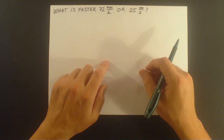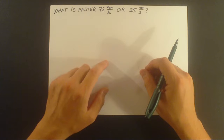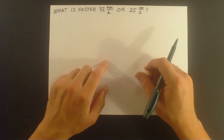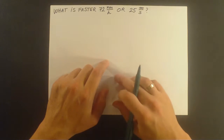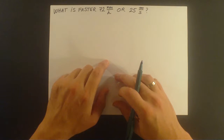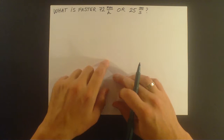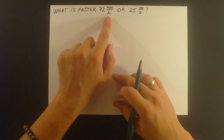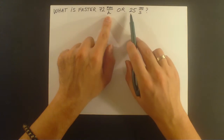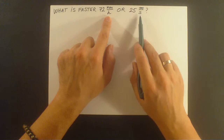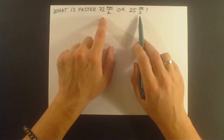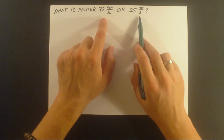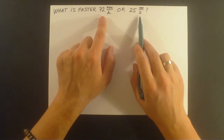We're going to see how to do that by solving one simple problem. The problem we want to solve today is: what is faster — 72 kilometers per hour or 25 meters per second? To solve this problem we need to convert one unit into the other.